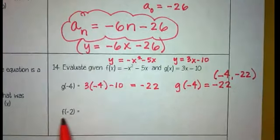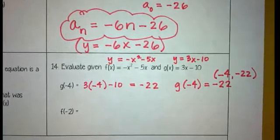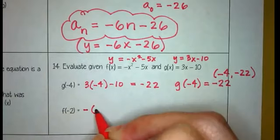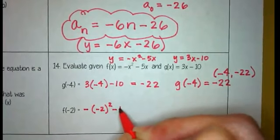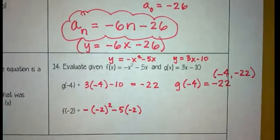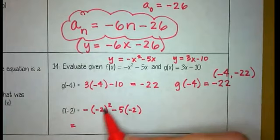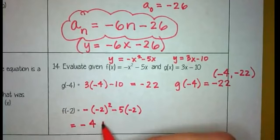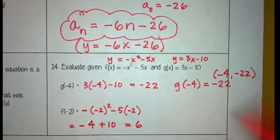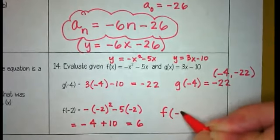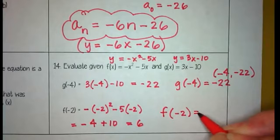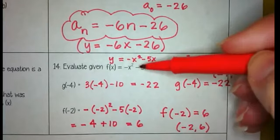This one says f of negative 2, so now this is telling me to use this function. That's how I know which one, because it's labeled as f. And I'm being told to fill in negative 2 in place of the x. So we have a negative and a negative 2 squared minus 5 times negative 2. All right, so negative 2 squared would be 4, opposite of that is negative 4, negative 5 times negative 2 would be plus 10, so this equals 6. So that tells us that when x was negative 2, the answer is 6, which means that the ordered pair negative 2, 6, appears on that parabola right there.